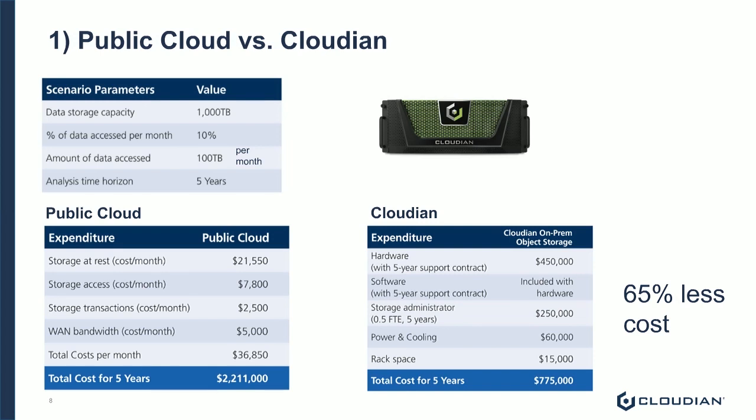And if you take that same environment with an on-prem solution, factoring in hardware costs, software, management, and power and cooling, you come out with a cost on the order of $700,000 to $800,000 — a 65% difference. That kind of makes sense because the public cloud provider is buying that equipment, managing it for you, and making a profit on that. They also have to plan for a certain level of utilization of that environment.